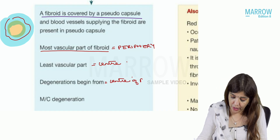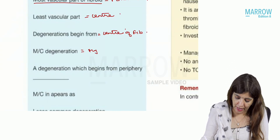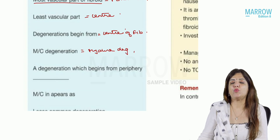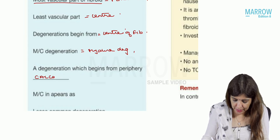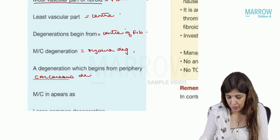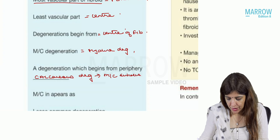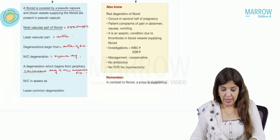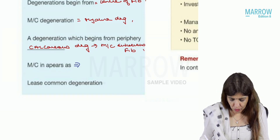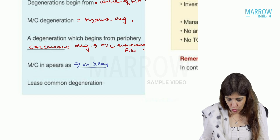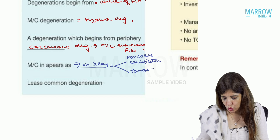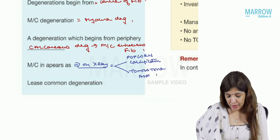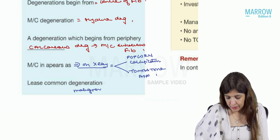Because the center is least vascular, degenerations begin from the center of the fibroid. The most common degeneration in a fibroid is hyaline degeneration. A degeneration which begins from the periphery is calcareous degeneration, and calcareous degeneration is seen in subserous fibroids. In calcareous degeneration, on X-ray you will get popcorn calcification or tombstone appearance. The least common kind of degeneration is malignant transformation.